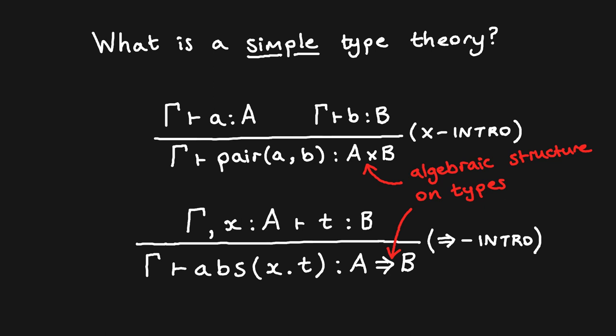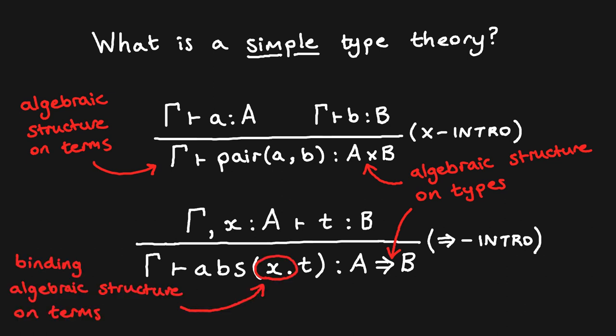In fact, the structure of types is exactly that expressible in universal algebra. Secondly, the terms themselves have multi-sorted algebraic structure. For instance, the pairing operator takes two terms of potentially different types and produces a new term, their pair. However, the structure on terms is more expressive than algebraic structure, as it also permits operators to bind variables in the operands. The term structure is therefore given by multi-sorted binding algebraic structure. The canonical example of a variable binding operator is lambda abstraction in a simply typed lambda calculus, but other kinds of variable binding operators are also common, for example in case-splitting or let-binding.